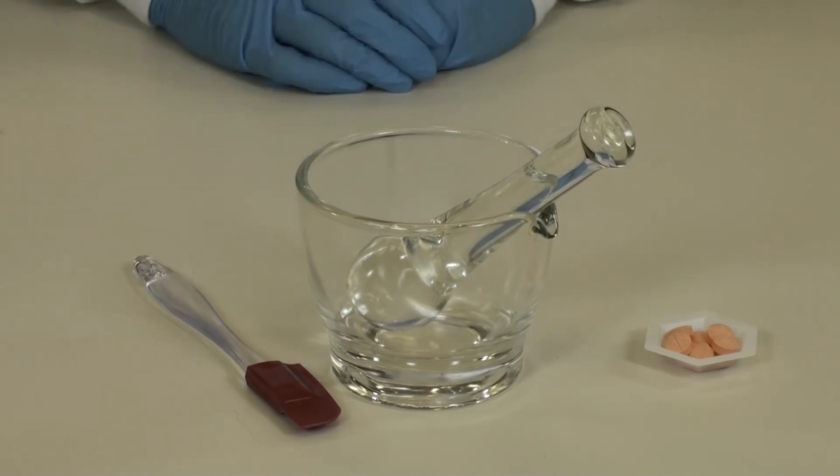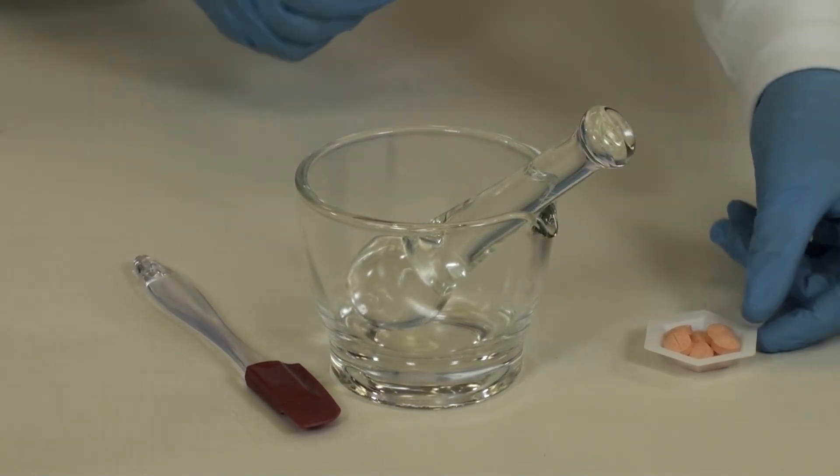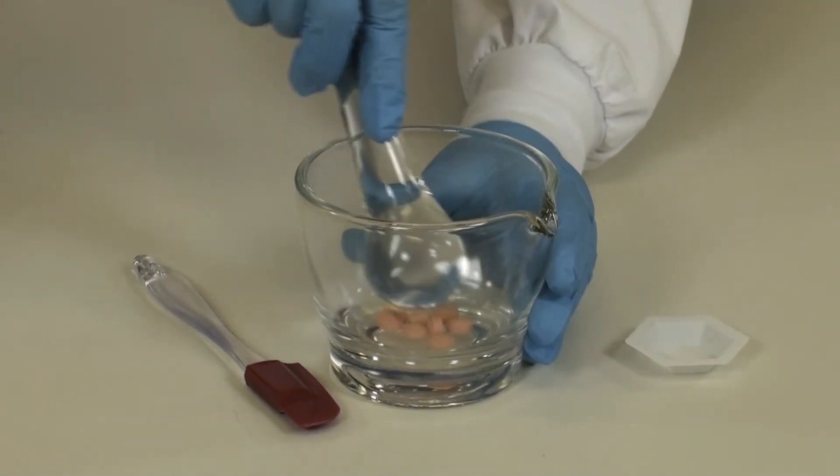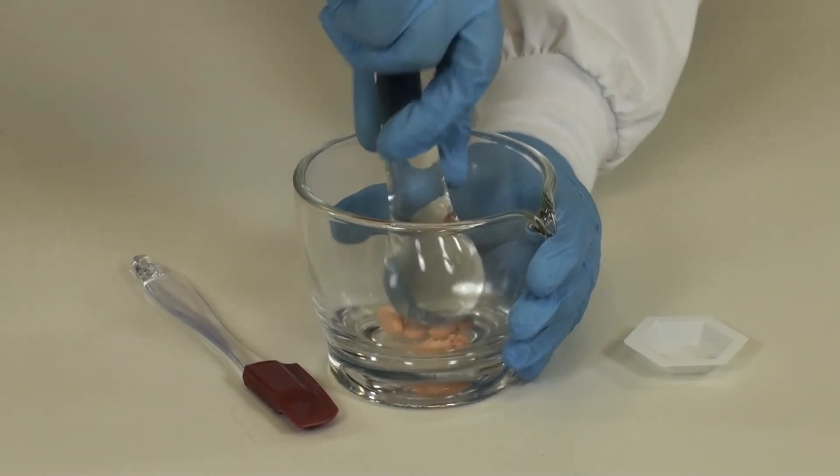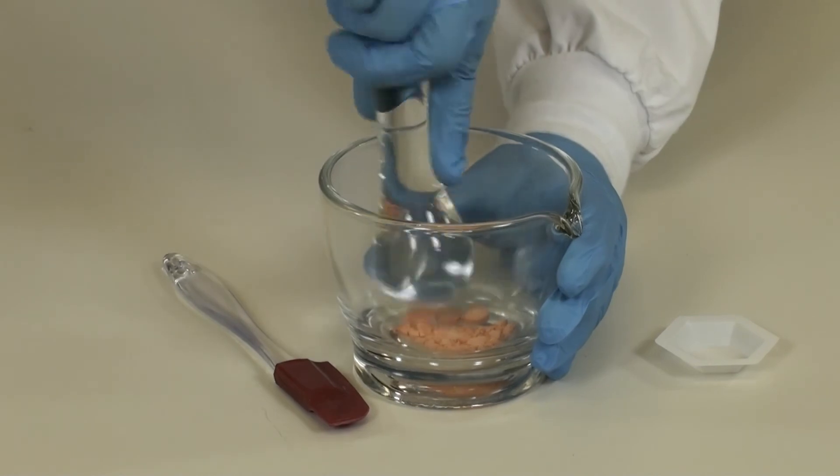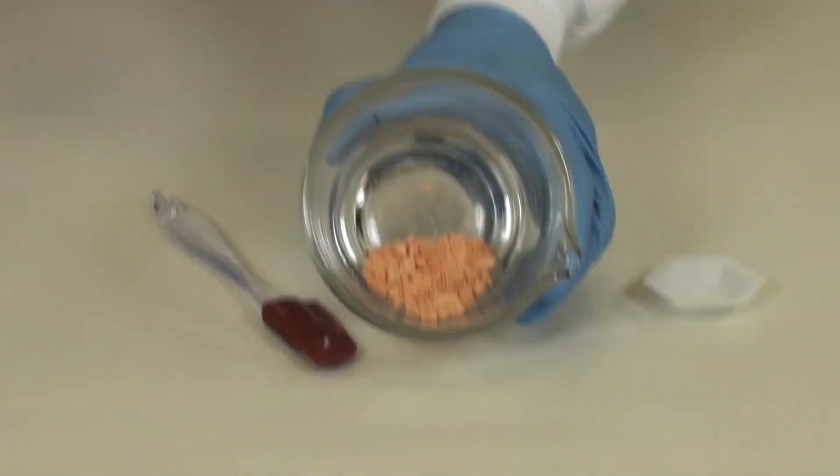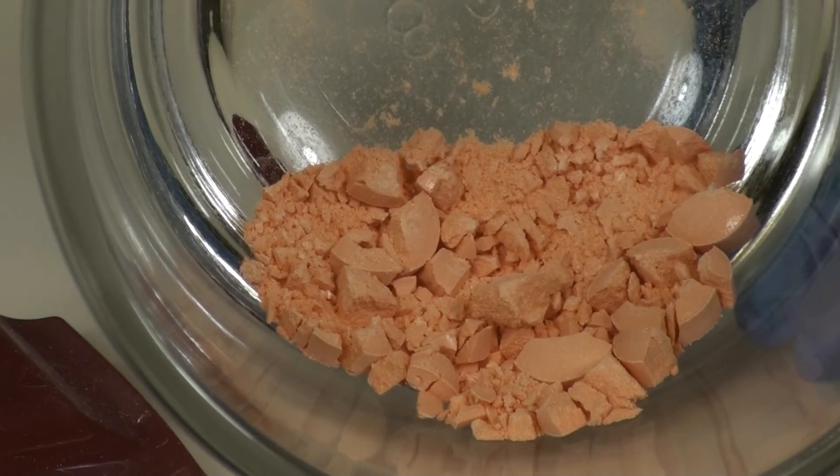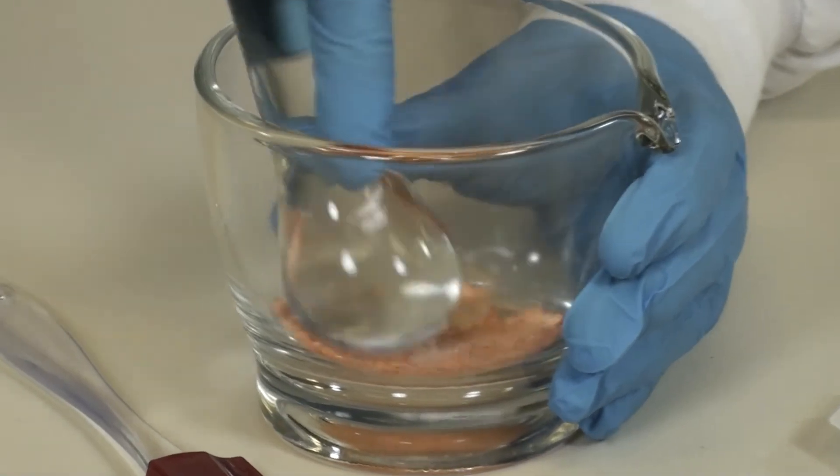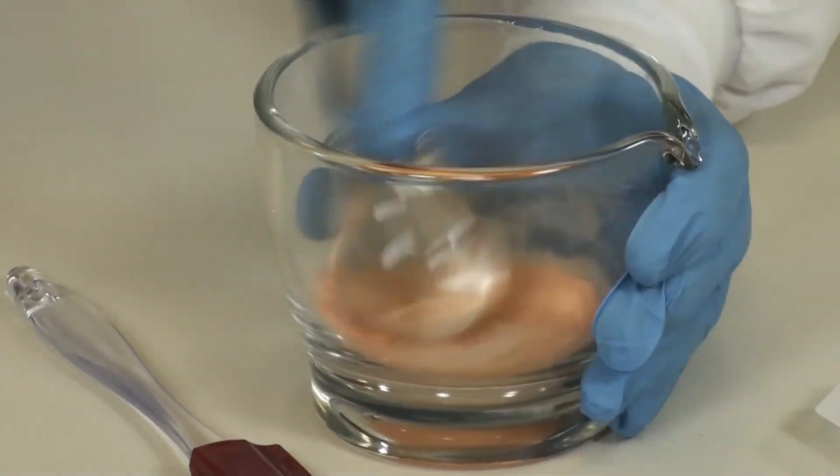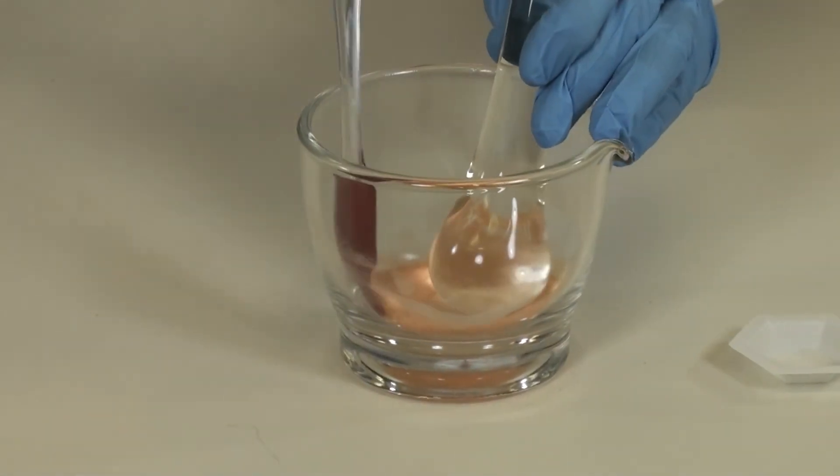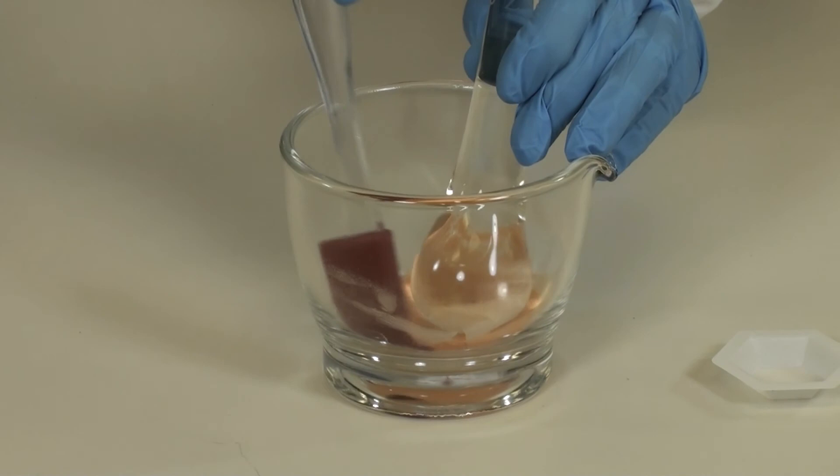Place the required number of allopurinol tablets in your mortar and triturate those to a fine powder, remembering to use a firm twisting motion to initially start the trituration process with the tablet. Continue to triturate until you have a very fine powder. If you need to move the powder down off the sides and back to the center of the mortar, use your rubber spatula.